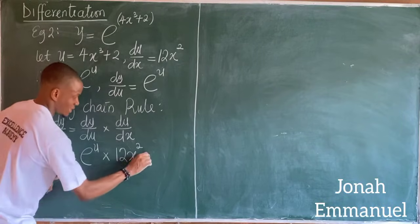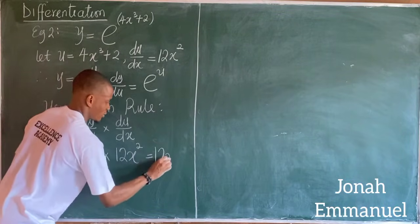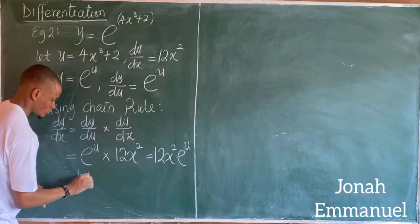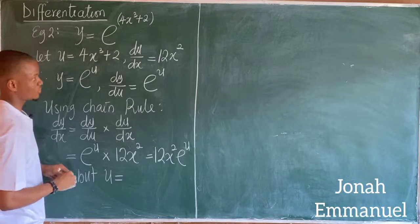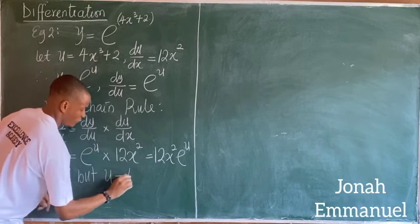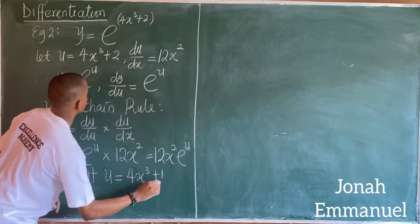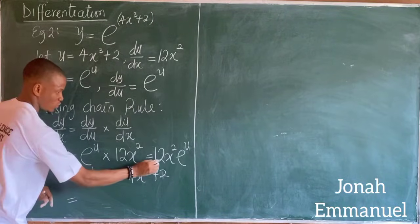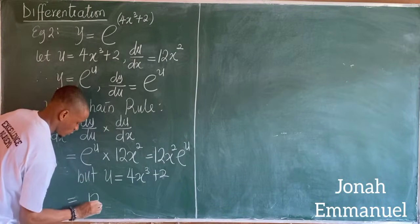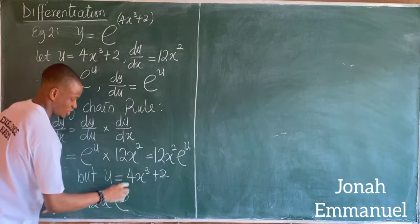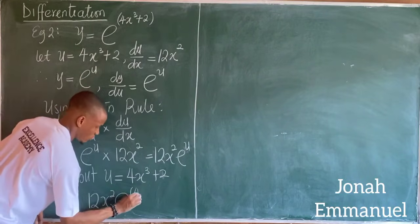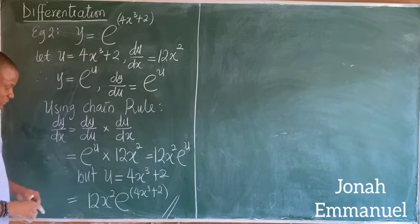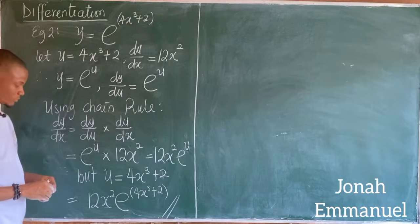Multiplying this out, it's now equal to 12x squared times exponential u. But we said that u is equal to 4x cubed plus 2. So therefore dy over dx is now equal to 12x squared exponential of 4x cubed plus 2. So this becomes my answer using chain rule.